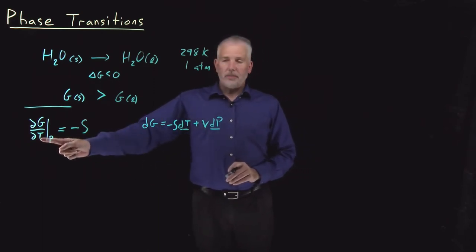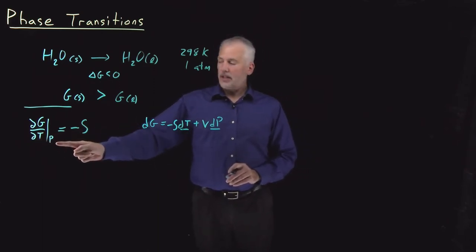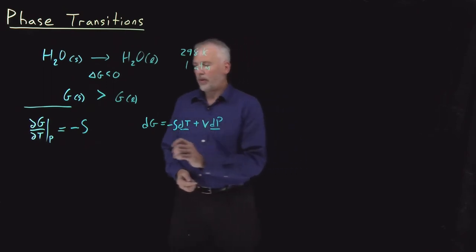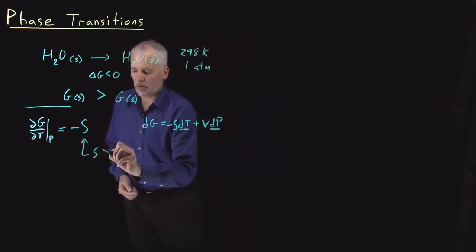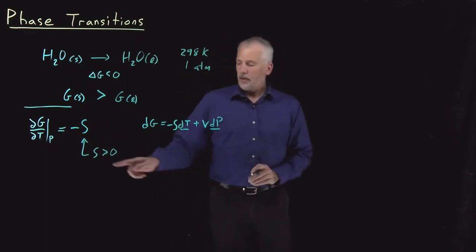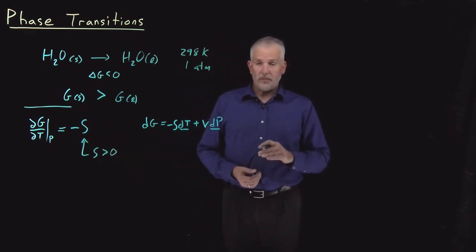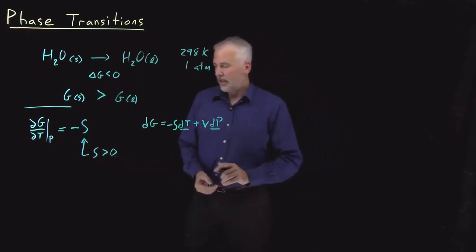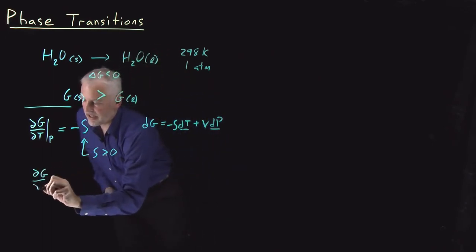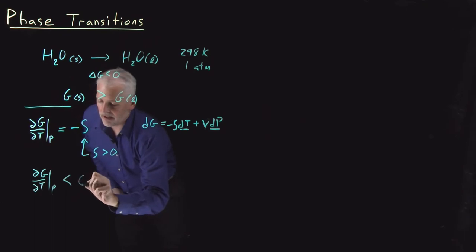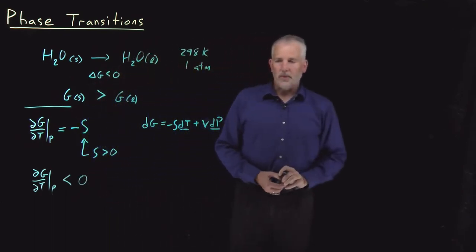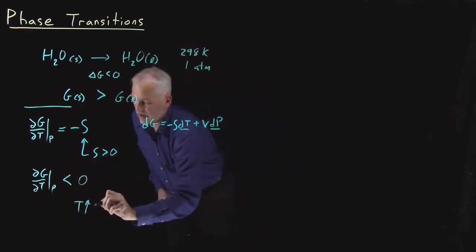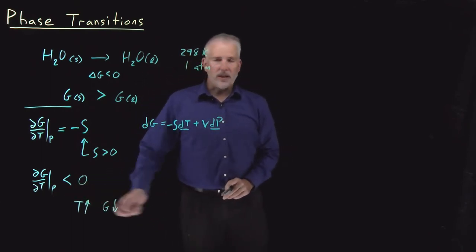When I raise the temperature of an object at constant pressure, its Gibbs free energy changes as negative S. We know from the third law that entropy is always positive — entropy is zero at zero Kelvin, but at any temperature above zero Kelvin the entropy is positive. Therefore dG/dT at constant pressure is always a negative number: free energy always decreases as I raise the temperature.